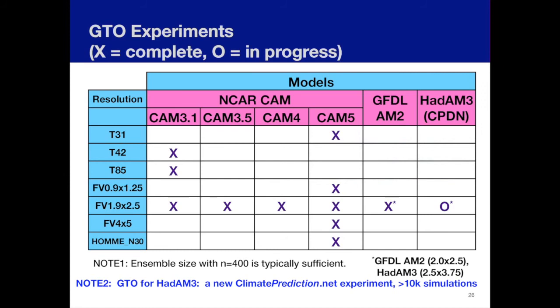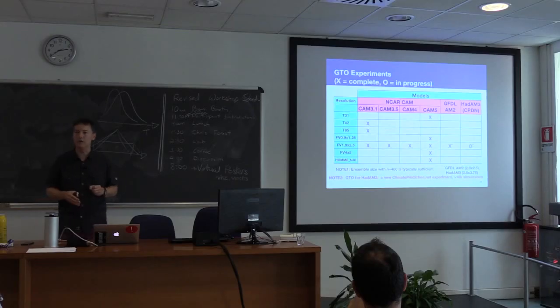Our goal is to understand how a model responds in terms of a global teleconnection operator, the GTO. We estimate the ensemble mean response R to an SST forcing F, where the SST forcing is localized and can be identified anywhere across the globe. We've also added a random patch method approach. What we look for is estimating the basic linear response K to a forcing here — and that sensitivity information is the operator used to assess the influence of a given SST anomaly in a given location on the regional response, in this case over North America.